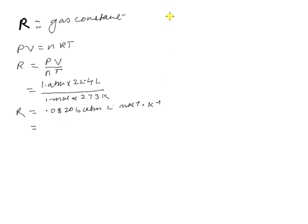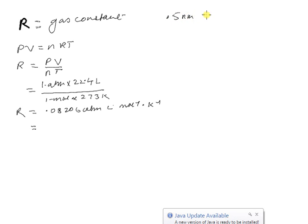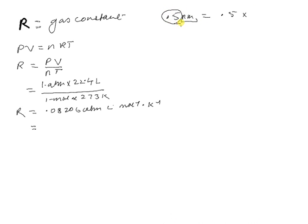It's easy to convert one unit into another. For example, say I have 0.5 nanometers and I want to convert that into meters. I take 0.5, and since one nanometer equals 10 to the power of minus 9 meters, I multiply to get 5 × 10⁻¹⁰ meters. In the same way, we can convert the units in R.